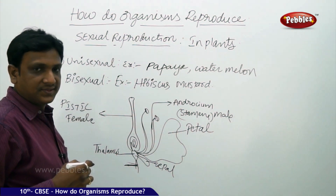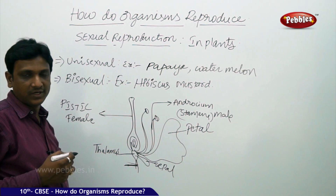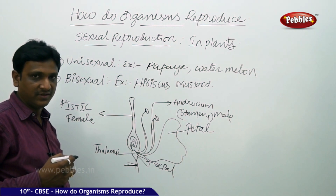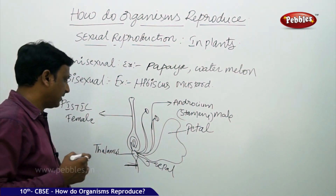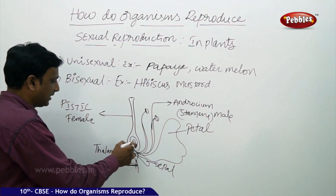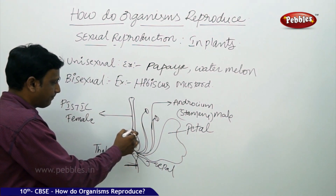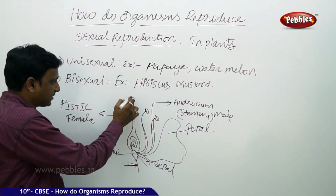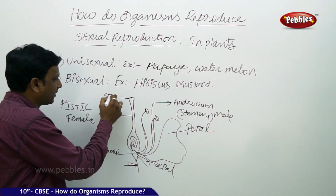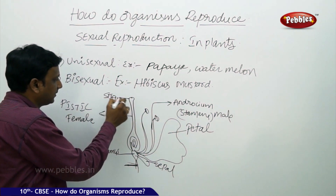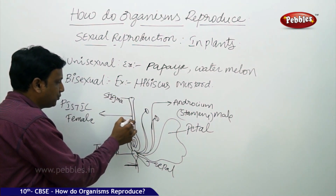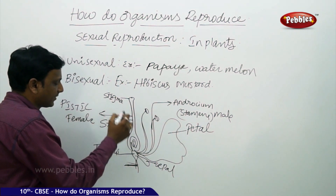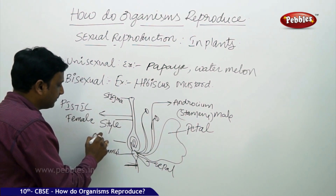In sexual reproduction, the male gamete fuses with the female gamete. The female gamete is located inside the pistil. The pistil has different parts: the top part is called the stigma, the tube-like structure is called the style, and the lower part is called the ovary.